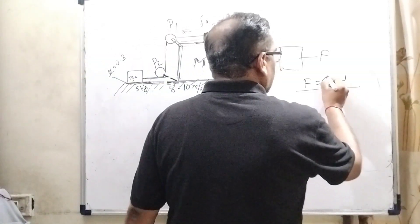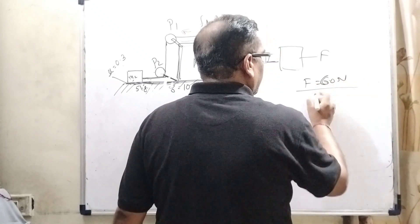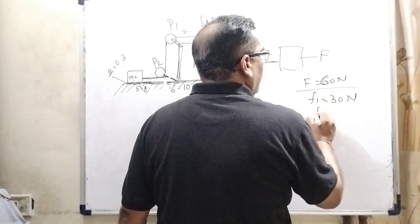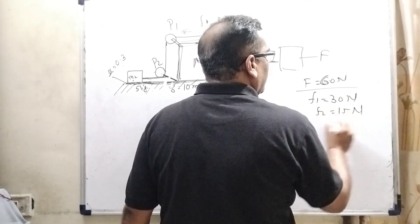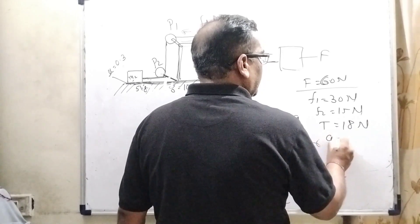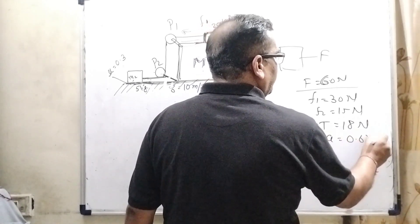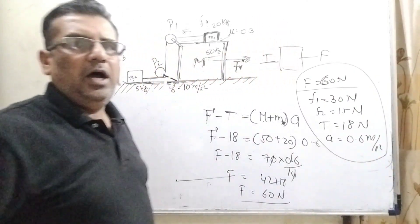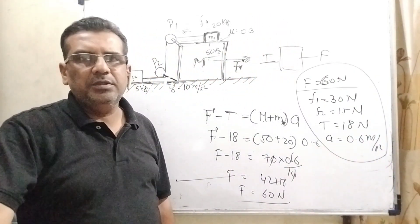Now final answer, capital F equal to 60 Newton, F1 equal to 30 Newton, F2 equal to 15 Newton, tension equal to 18 Newton and acceleration is 0.6 meter per second square. So we have get all the answers. I hope so you understood these situations.